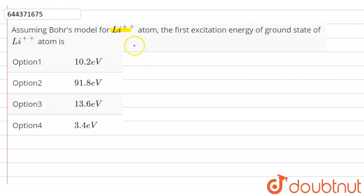So the first excited state is n2 equals to 2, and ground state means n1 equals to 1. Now if you have to find the excitation energy, then ΔE is equals to 13.6 z² [1/n1² - 1/n2²].